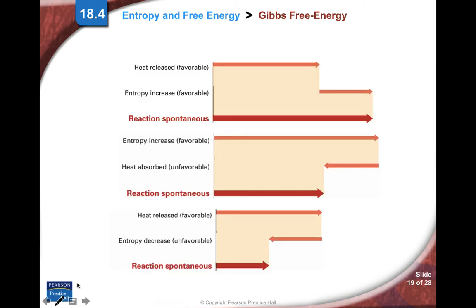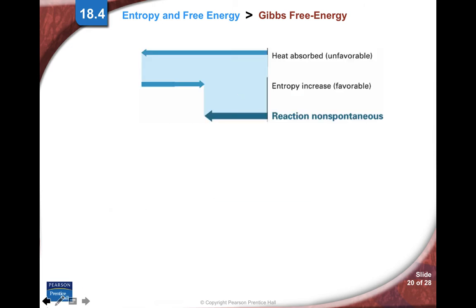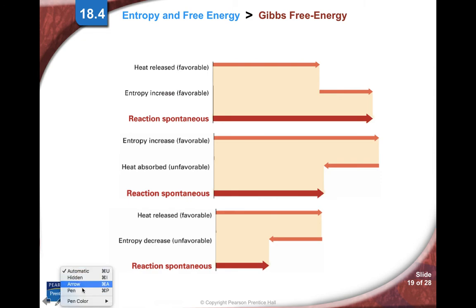Flipping back to the last slide, these are the situations that are favorable. This one is always spontaneous. This is delta H negative and delta S positive. So no matter what, you'll always get a delta G that's negative, always spontaneous.